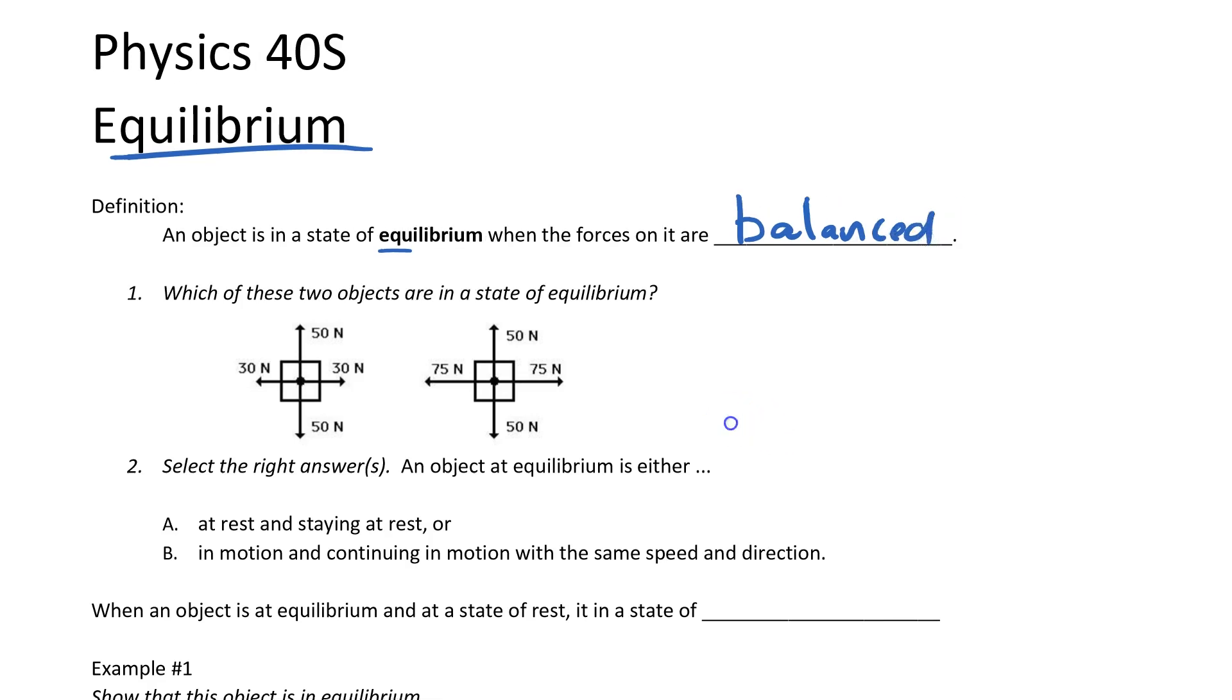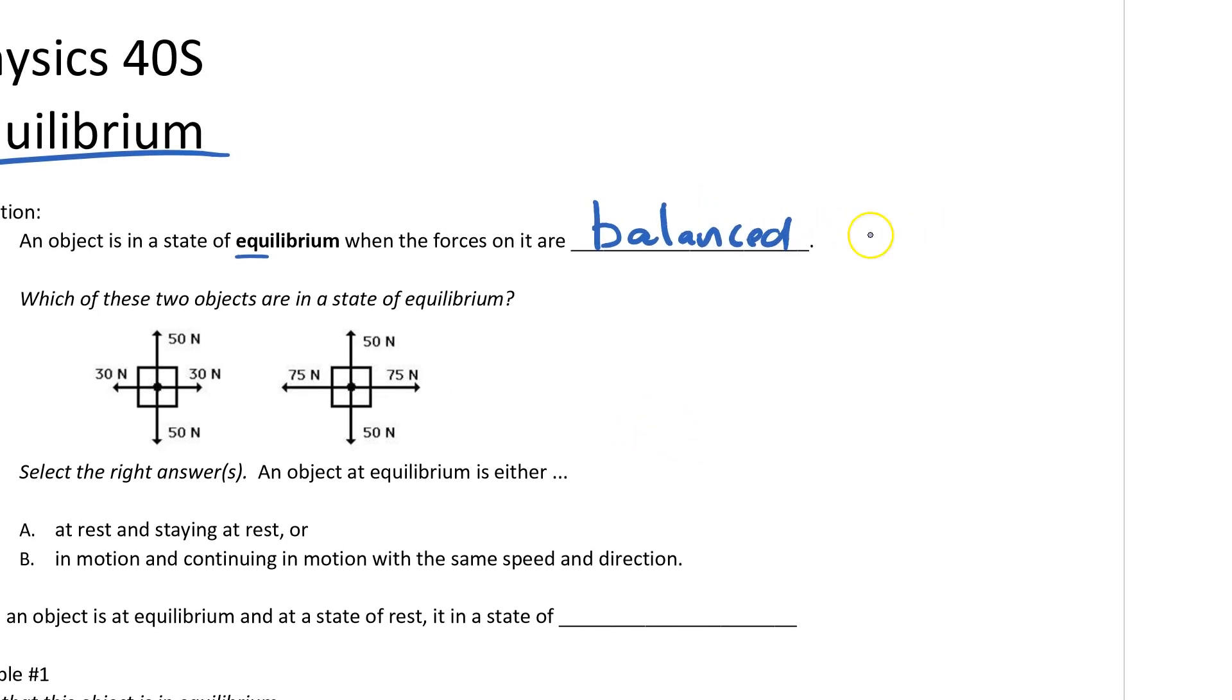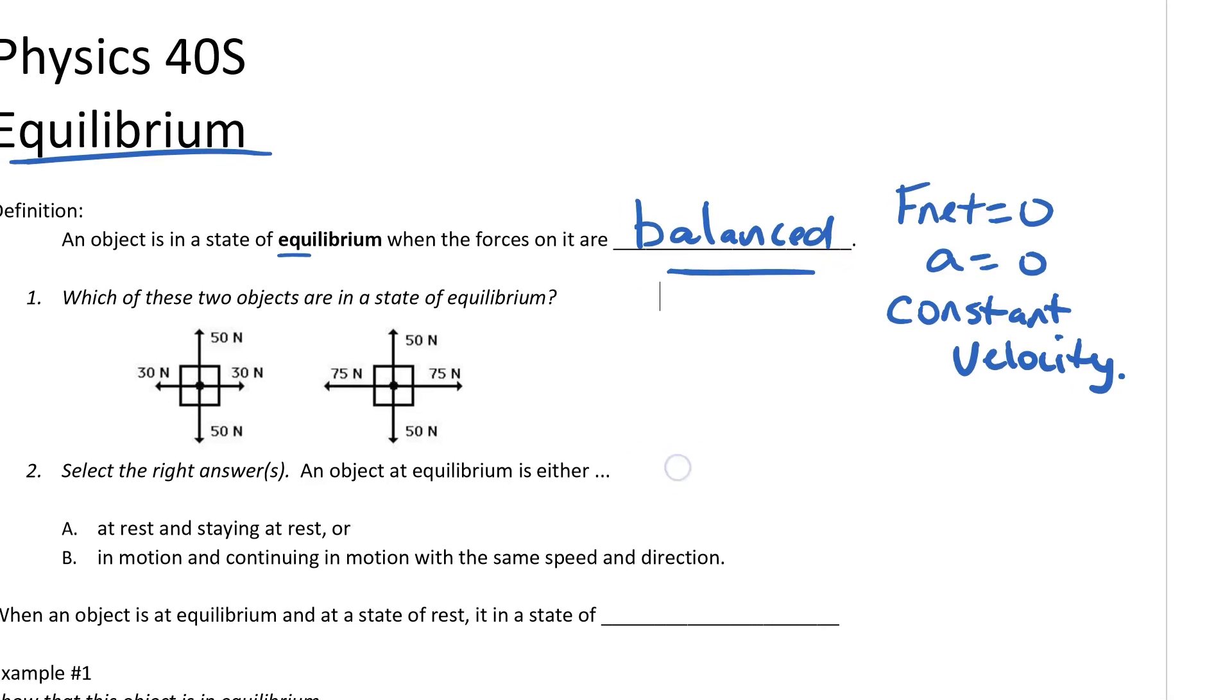Other ways you can say that the forces are balanced is you could say F_net is equal to zero. You could also say the acceleration is equal to zero. You can also use the words constant velocity. So it's something that we've seen many times, we're just giving you a word: equilibrium for this situation.